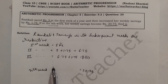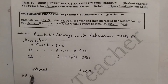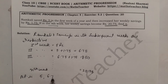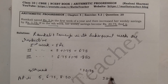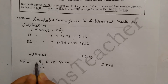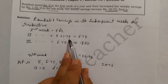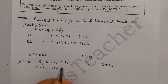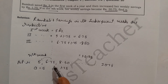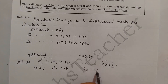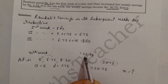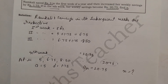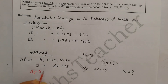The AP is 5, 6.75, 8.50, ... and the nth term aₙ = 20.75. Using the formula aₙ = a + (n-1)×d: 20.75 = 5 + (n-1)×1.75. So 20.75 - 5 = (n-1)×1.75, which gives 15.75 = (n-1)×1.75.